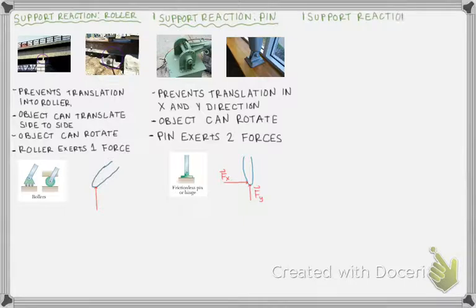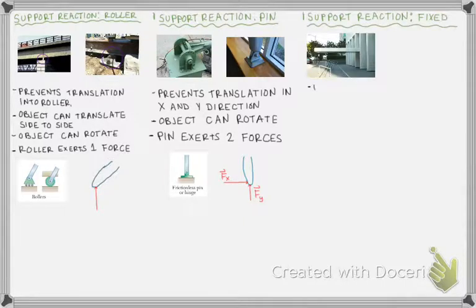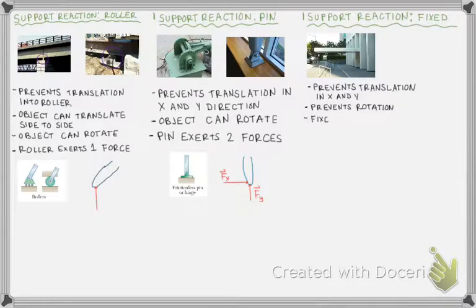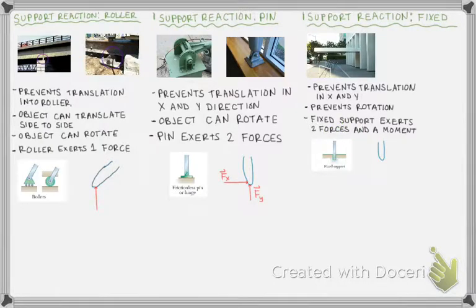The last support I'm going to look at in two dimensions is called a fixed support. Here is a picture. You might see a beam sticking out of a building. When it's secured in place within concrete, that's considered a fixed support. This is going to prevent translation in the X and Y. I'm not going to be able to move this in the X or Y direction. But I'm also not going to be able to rotate this beam. So the fixed support also prevents rotation. A fixed support exerts two forces and a moment onto the object. Here's a representation of a fixed support. If I want to draw a free body diagram of the beam, I'm going to put on it a force in the X, a force in the Y, and a moment.